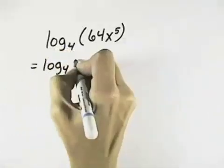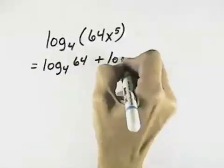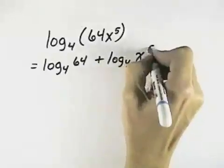Log base 4 of the first part of the product, which is 64, plus log base 4 of the second part of the product, which is x to the 5th.